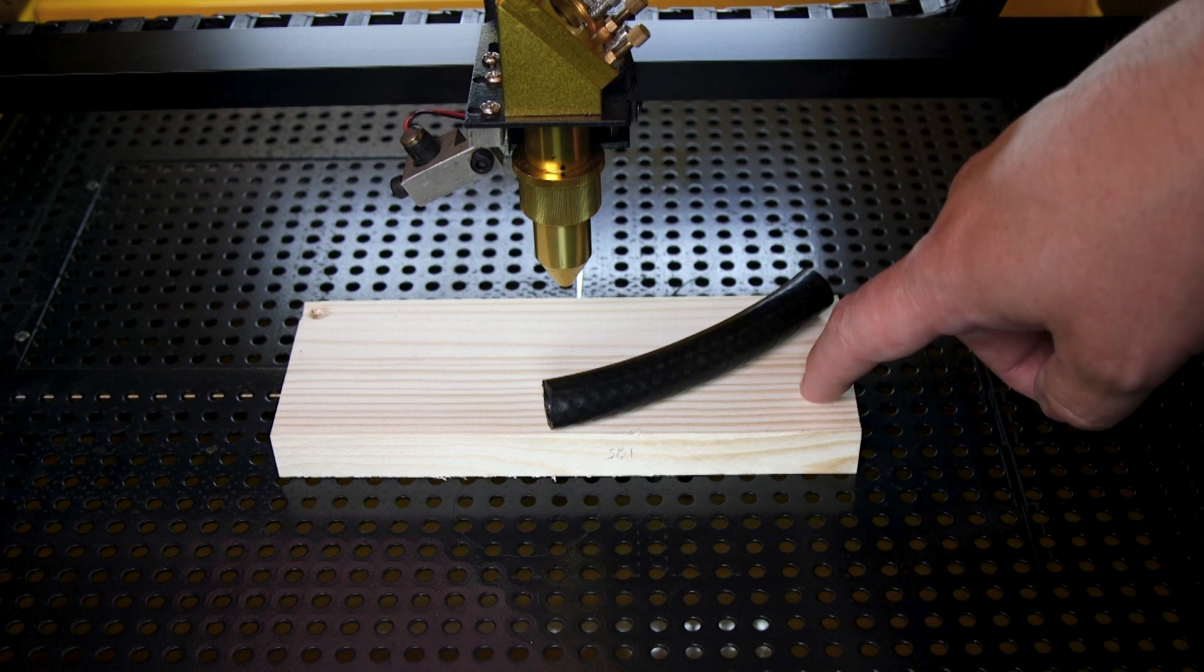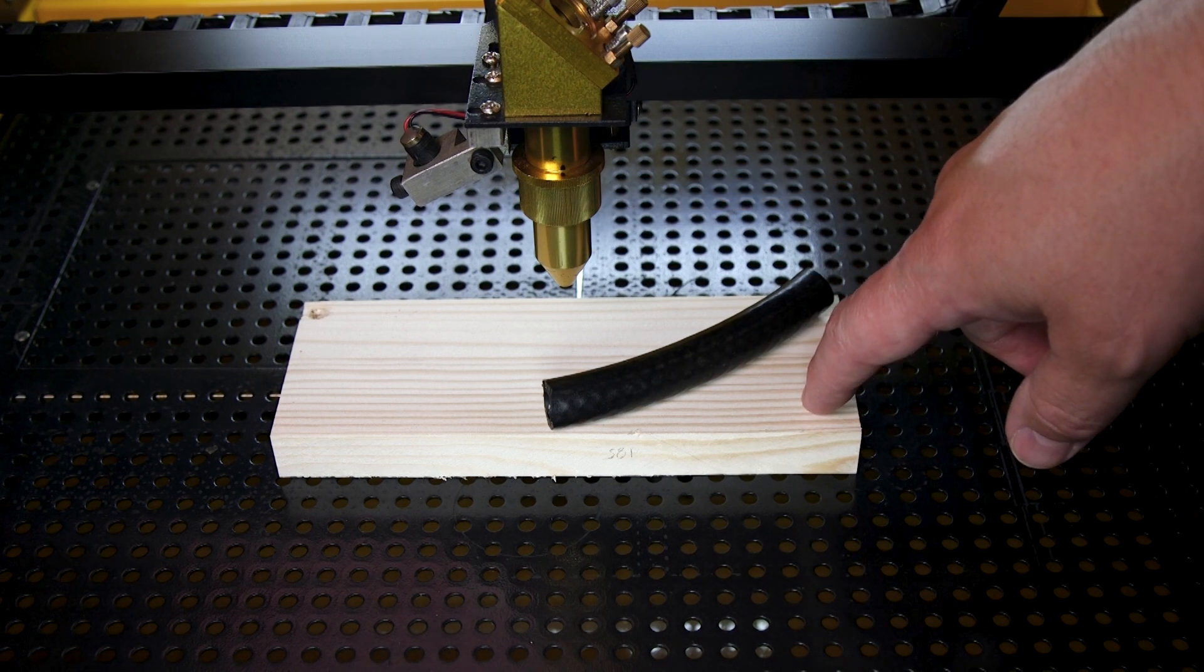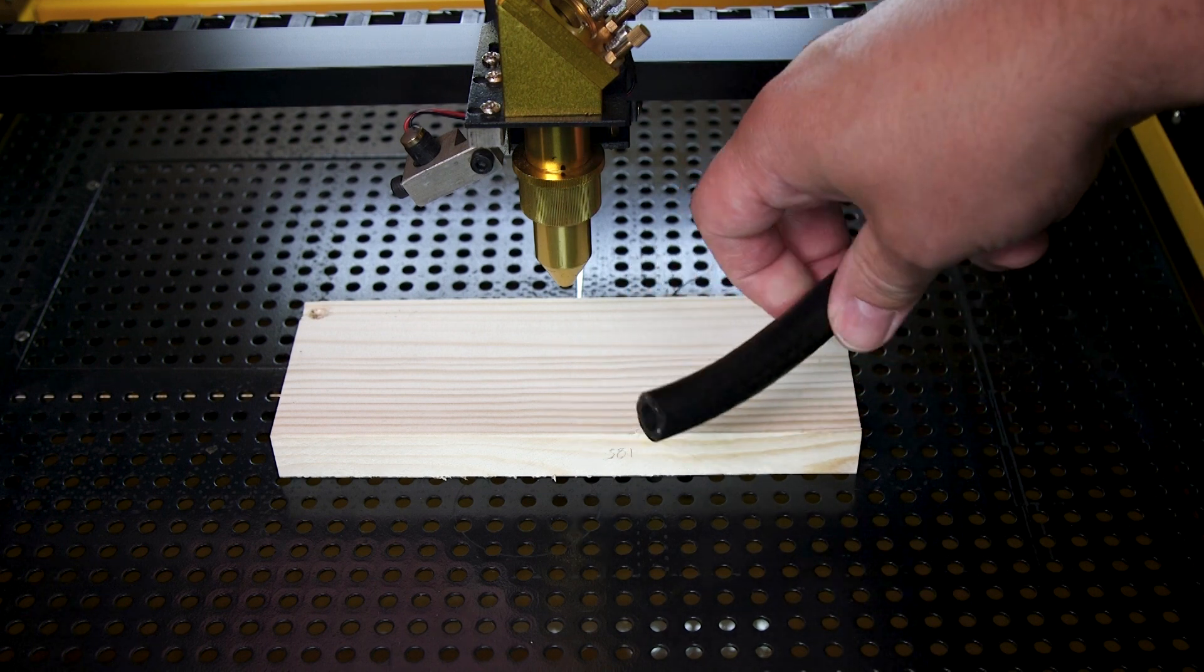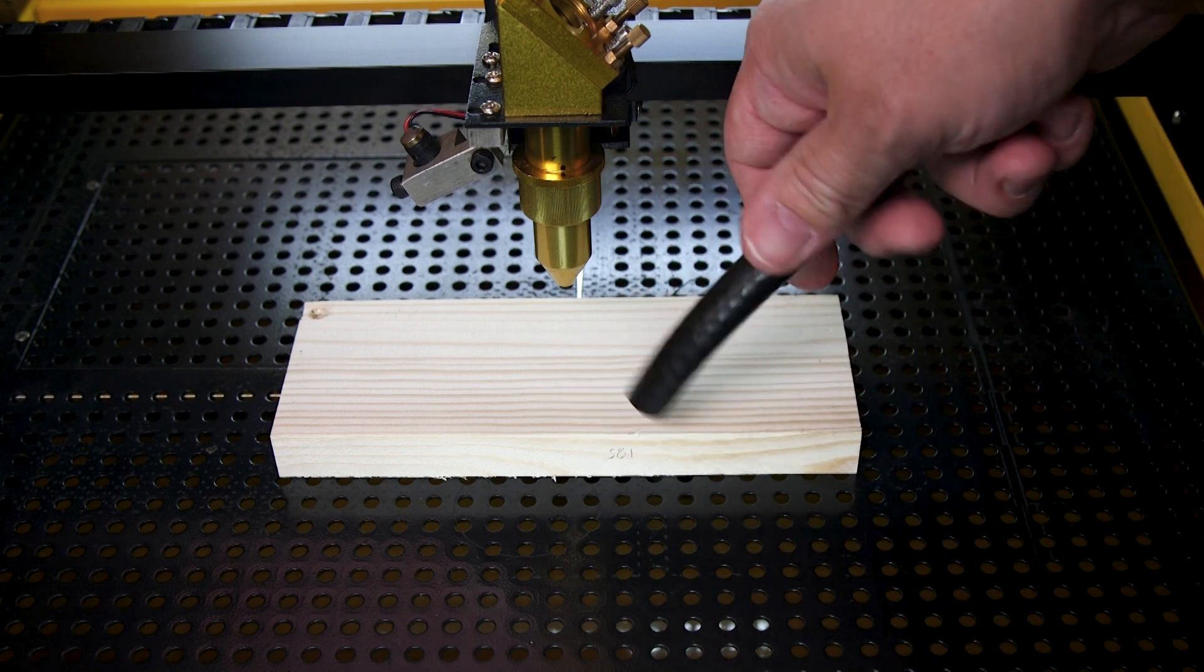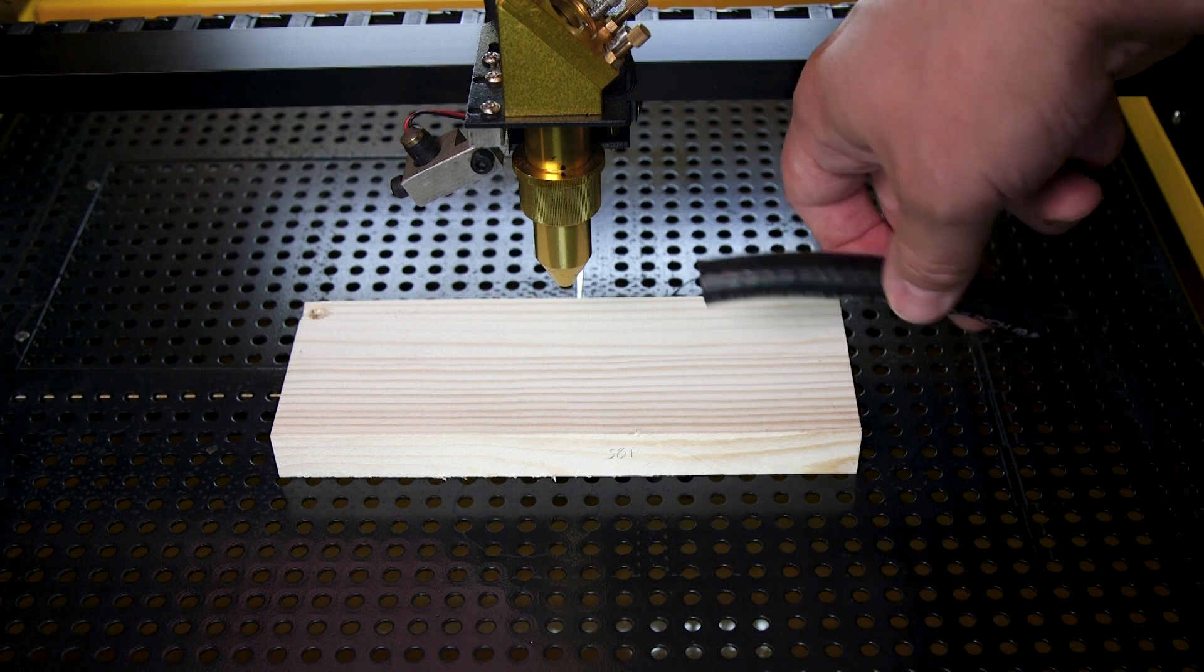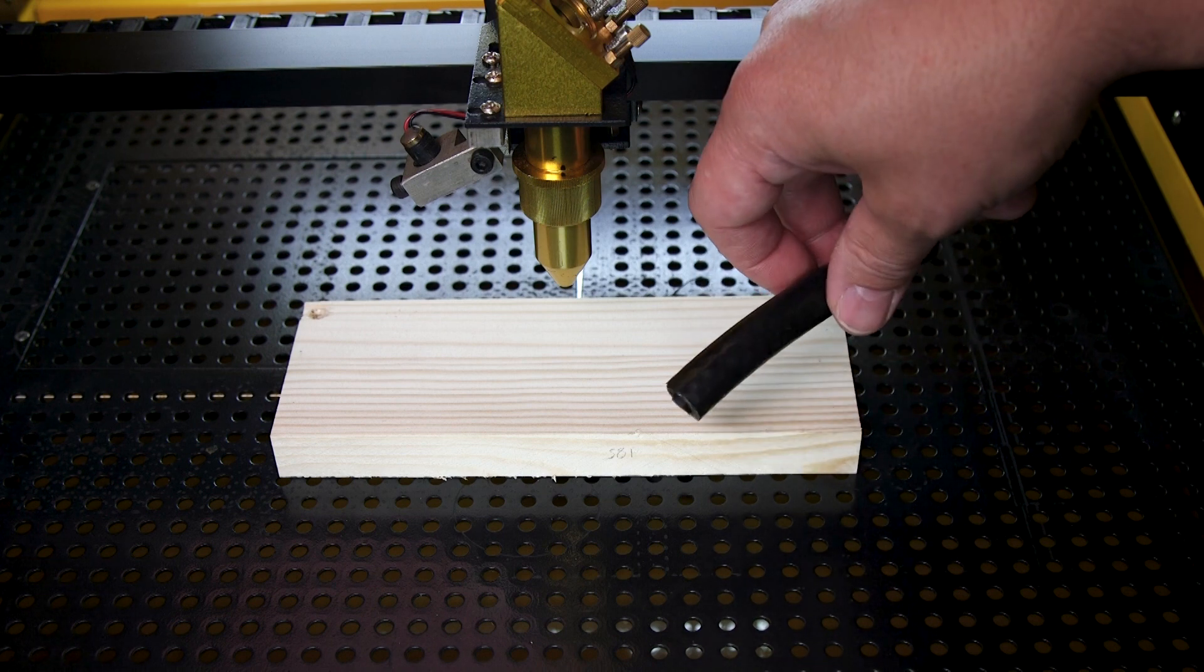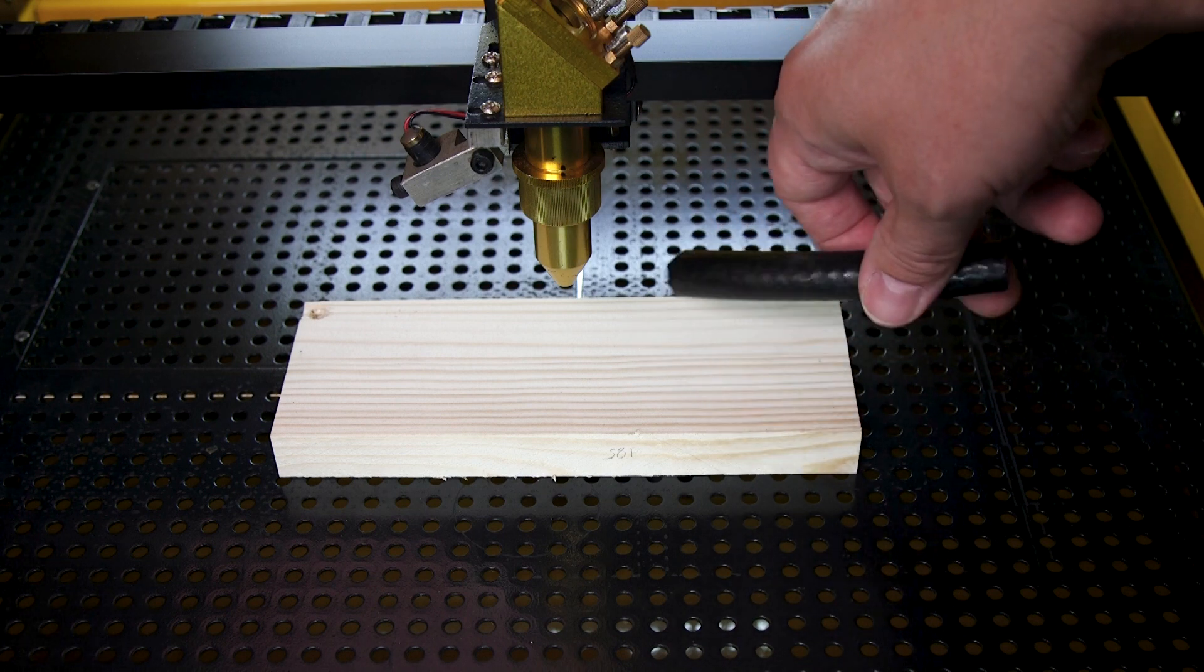To focus the laser, all you're going to need is a scrap piece of wood and something to wedge under the wood. I'm going to use this piece of rubber hosing simply because I have it kicking around and it's kind of non-slip, but you can use whatever you have kicking around, including another piece of wood.